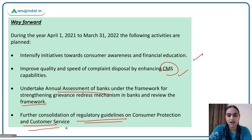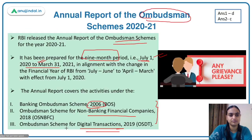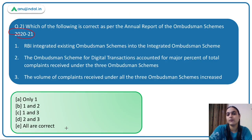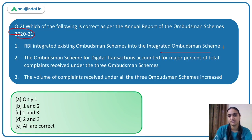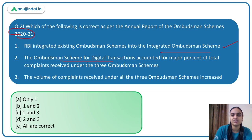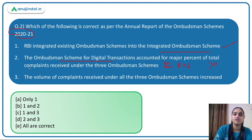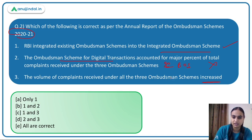Coming back to Question 2: Option 1 — RBI integrated existing ombudsman schemes into the Integrated Ombudsman Scheme — is correct. Option 2 — that digital transactions accounted for the major percentage of complaints — is incorrect, as 90% came from the Banking Ombudsman Scheme. Option 3 — volume of complaints increased by 22.27% — is correct. So the answer is Option C.